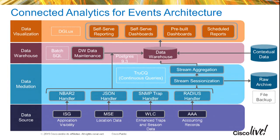Our Connected Analytics for Events architecture is focused on AAA, SNMP traps from the WLC, MSE location data, and NBAR2. We're getting IP fix records from the ISG — your edge router. There's also an option via VNAM, or you can span traffic off the Wi-Fi VLAN and send it to a CSR on our on-prem collector. Our handlers are basically listeners consuming those protocols and events. We then sessionize and normalize those packets as they come in, and send the data into the data warehouse if we decide to store it. We only store data we want to look at later.